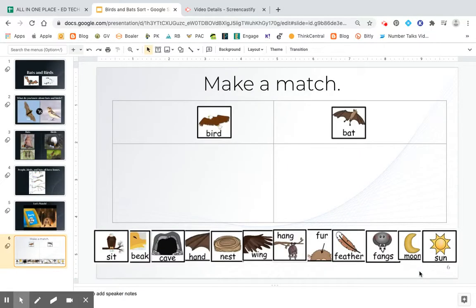Now that we've gotten to learn about bats and birds, let's see if we can make some matches. So up here, you'll see I have the word bird, and I have a picture of a bird there. It's an eagle. And then over here, I have a bat. And you can see the picture of the bat. Now, down here, I have all kinds of pictures.